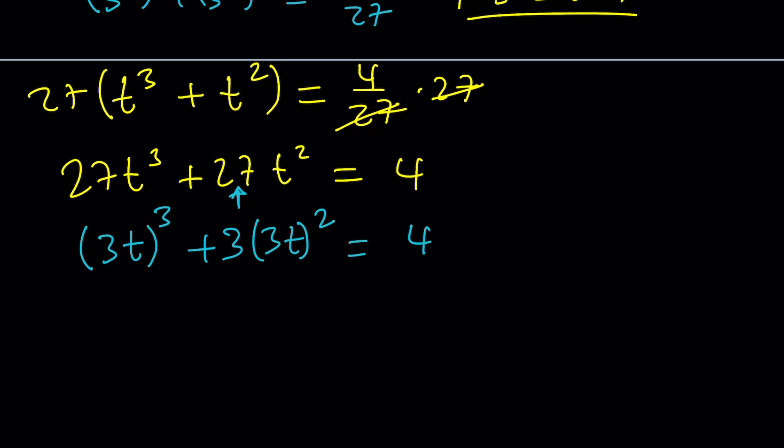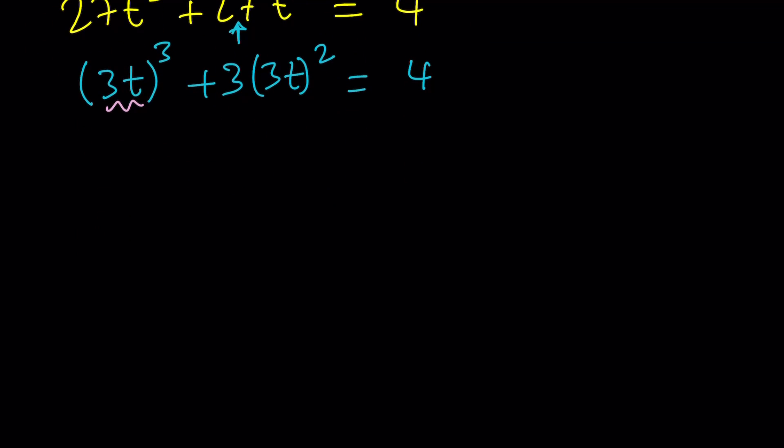So let's go ahead and write 27t cubed as 3t to the power 3. And this one can also be written as 3t to the second, but we're missing a 3, so we'll put a little 3 there. Make sense? So 3 times 9 is going to give us 27, which is what we have. And that equals 4.